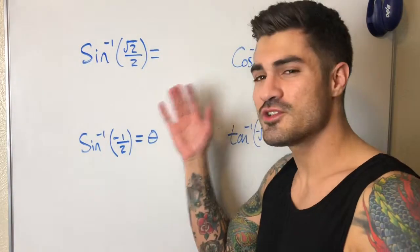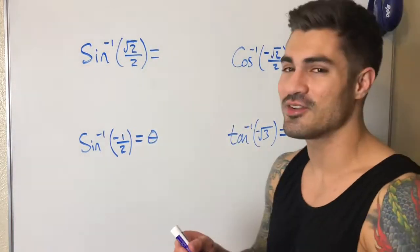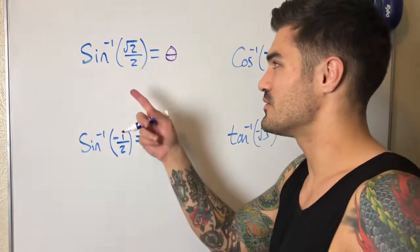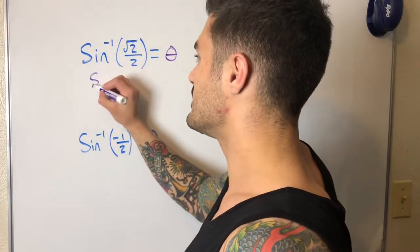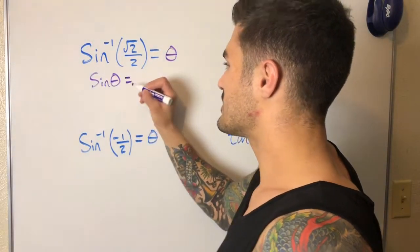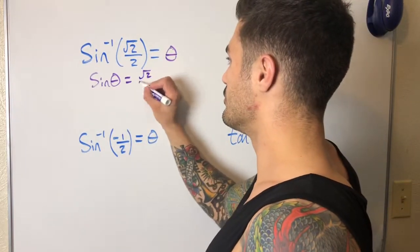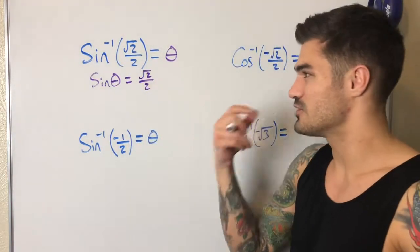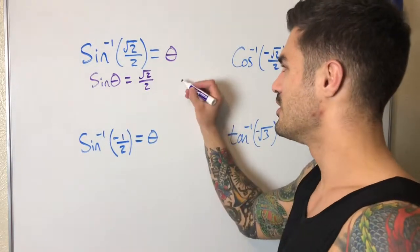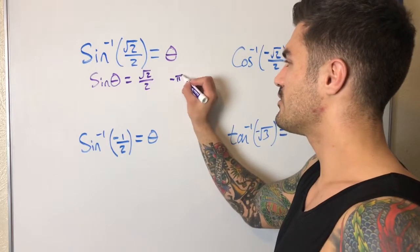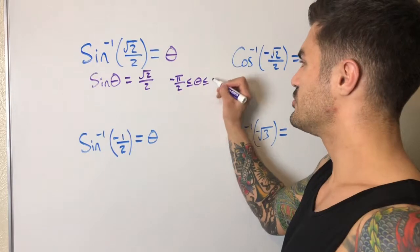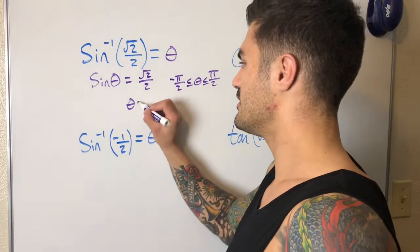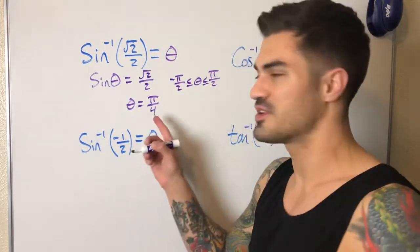Let's do some examples. What is sine inverse of √2/2? These inverse trig functions take in a value and spit out an angle. I can use the definition of an inverse function, switch the input and output, and write it as: the sine of what angle gives me √2/2? I'll write a reminder that this angle must be between negative π/2 and π/2. It's in the first quadrant, so theta is π/4.